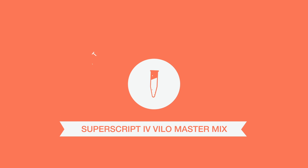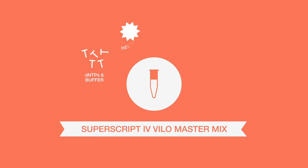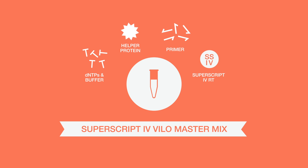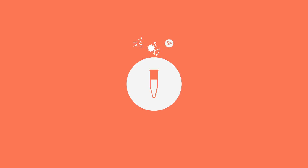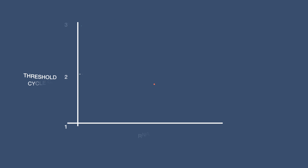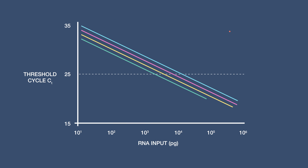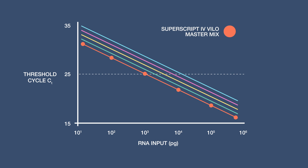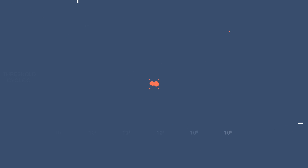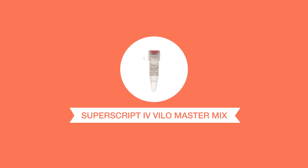SuperScript 4 VELO Master Mix contains a robust thermostable reverse transcriptase and all necessary reaction components in an optimized buffer. Using SuperScript 4 VELO Master Mix allows detection of both low copy and high copy targets, which means even poorly expressed genes can be discovered.